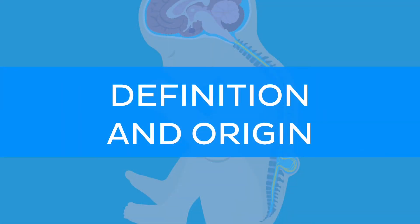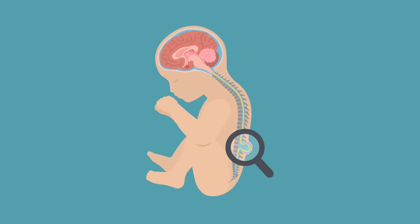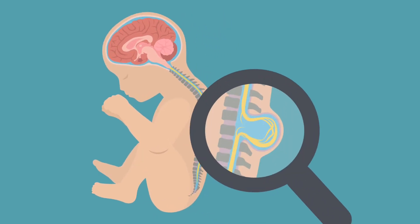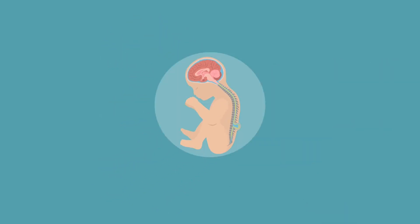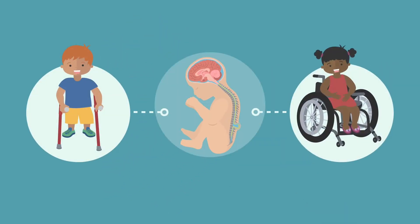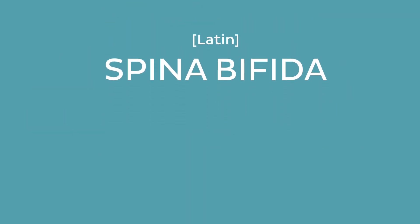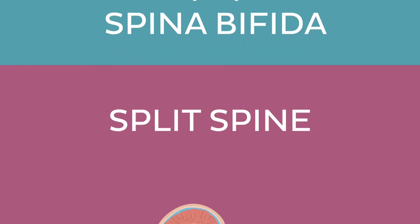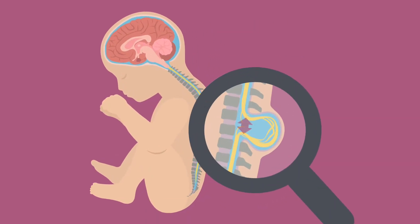Let's start with the definition. Simply said, spina bifida is a birth defect that affects the baby's spine, resulting in varying damage to the spinal cord and nerves, which can lead to different degrees of paralysis, mobility issues and other complications. The term spina bifida comes from Latin and it literally means split spine, which is a pretty apt description for this condition, as the spine doesn't close completely.